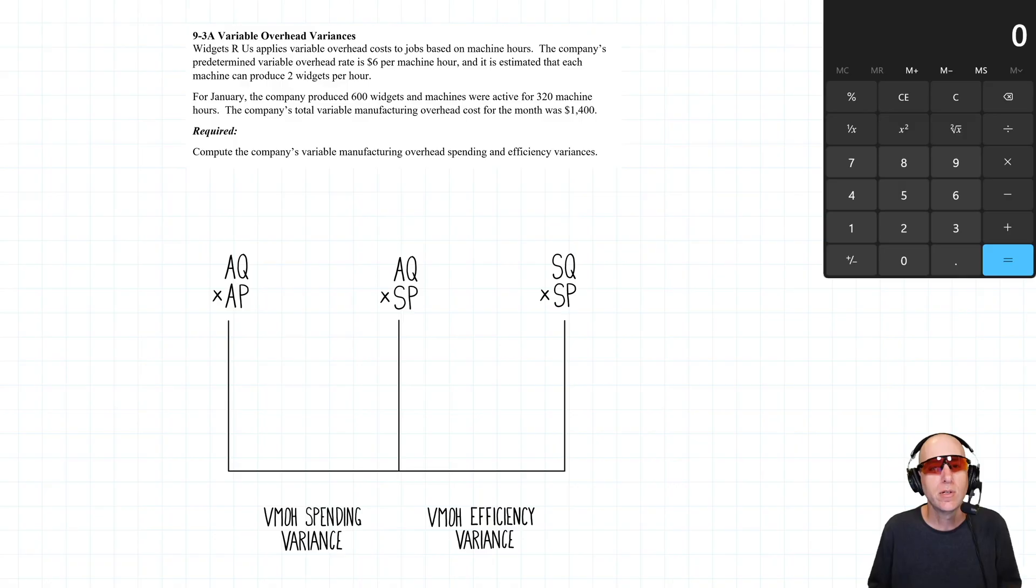I adjusted my glasses. If you haven't tuned into my previous videos this module, I just want to tell you I'm having eye issues so I'm having to wear glasses for the light, not just to look cool, although that's a wonderful side effect. Widgets Are Us applies variable overhead cost of jobs on the basis of machine hours.